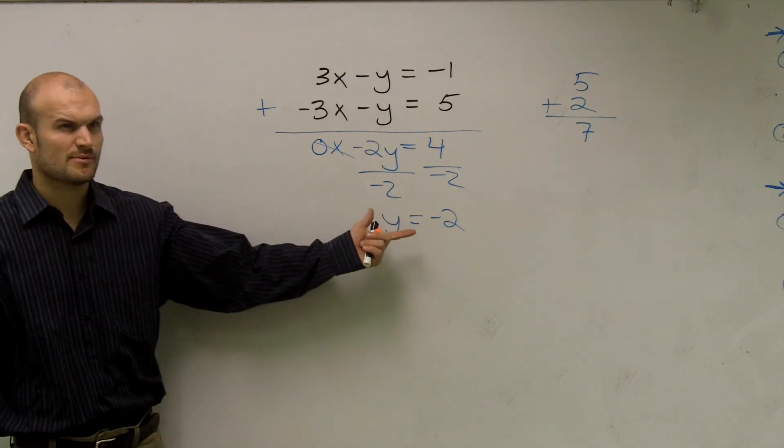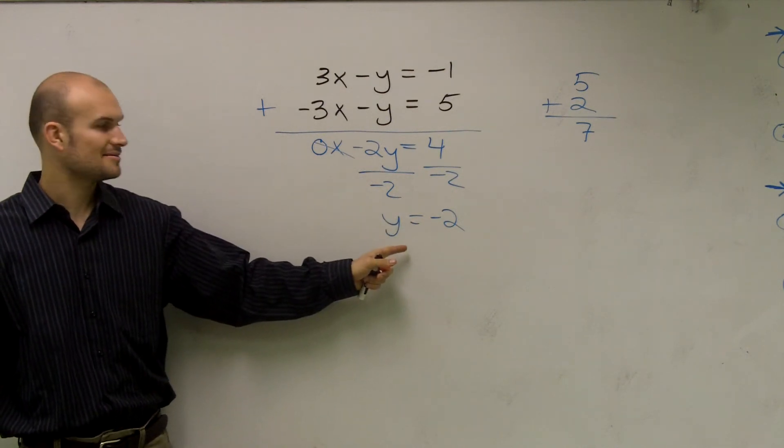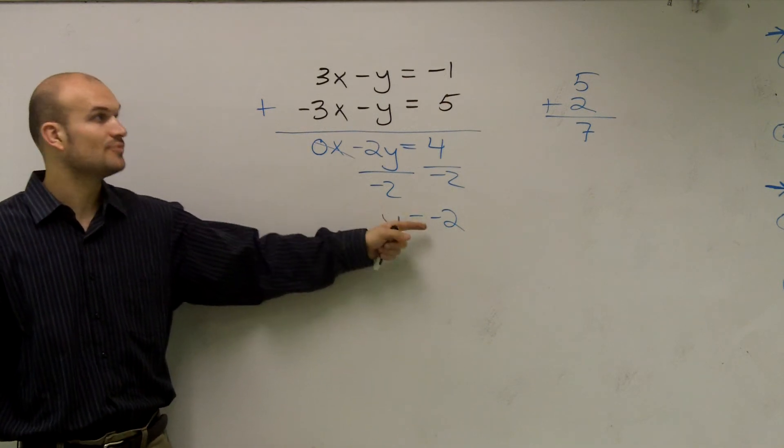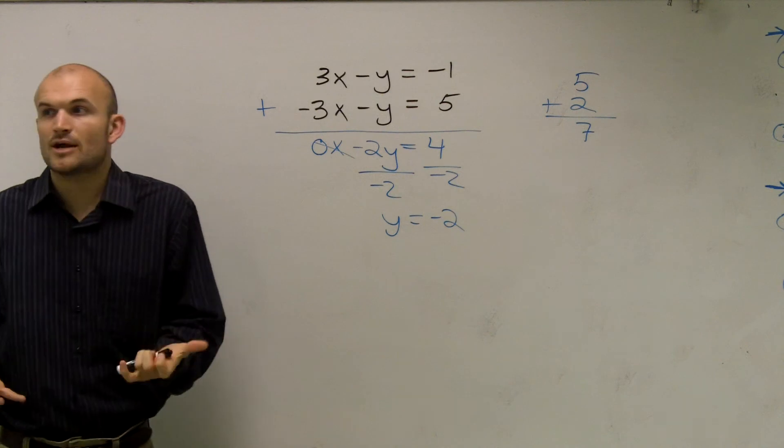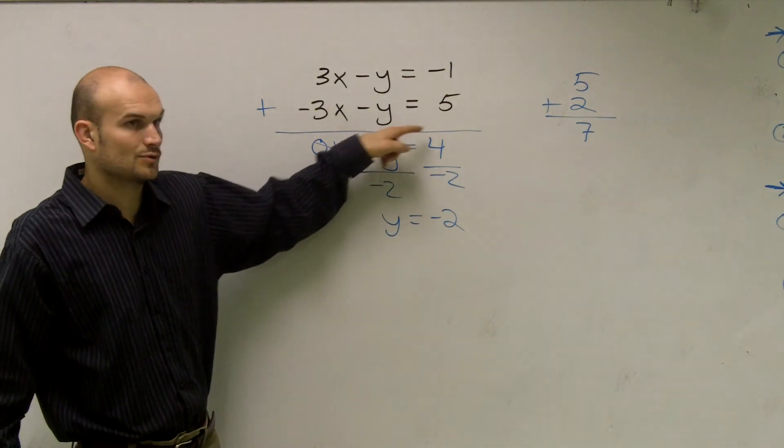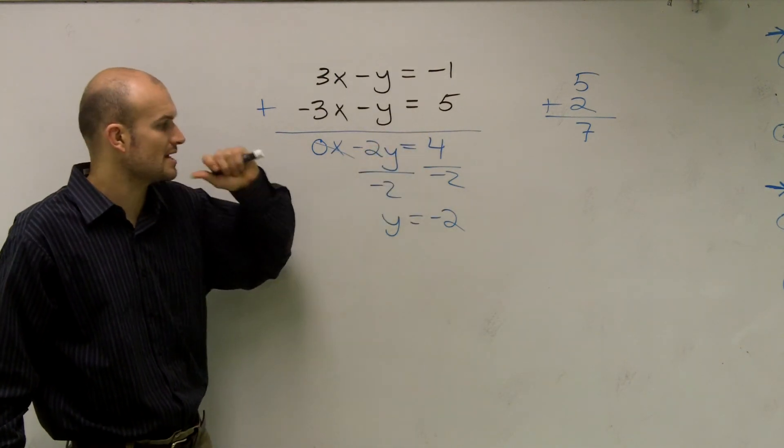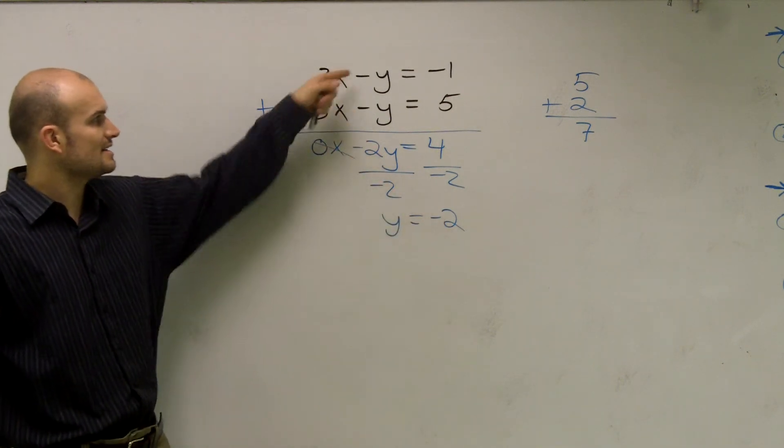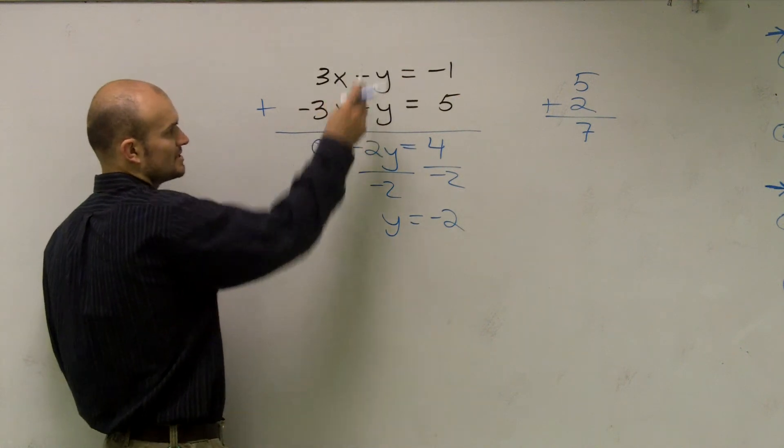Now, I've found my y value. So now I know what this is. I can plug this back into one of my equations. Now, remember, it doesn't really matter which equation. So just pick one. Where did I get the 2 from? I had negative 2y equals 4. And I got rid of the negative 2 by dividing the negative 2 on both sides. So now, once I have my negative 2, I'm going to plug that into one of these equations for y.